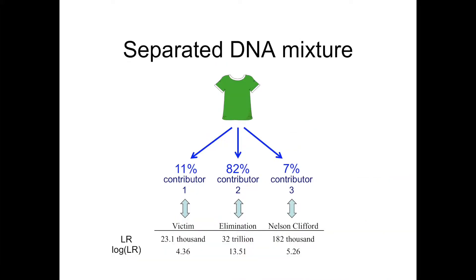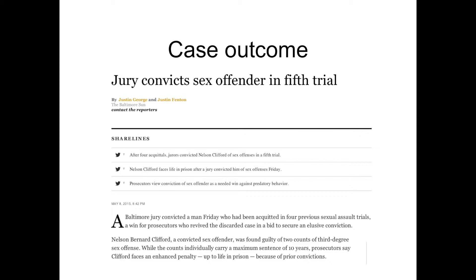The green shirt was separated objectively into three genotypes: an 11%, an 82%, and a 7% contributor. After those genotypes were objectively inferred without examination bias, comparisons were made producing match statistics to the victim, the elimination, and Nelson Clifford. The outcome was that in this fifth trial, and also in a sixth one, the jury did convict Mr. Clifford of a sex offense.